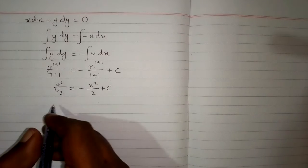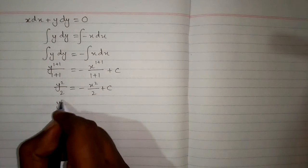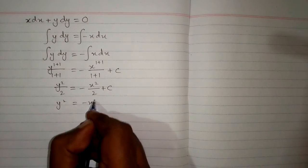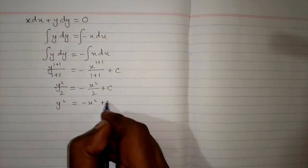So we will multiply both sides by 2. So we have y square is equal to minus x square plus 2c.